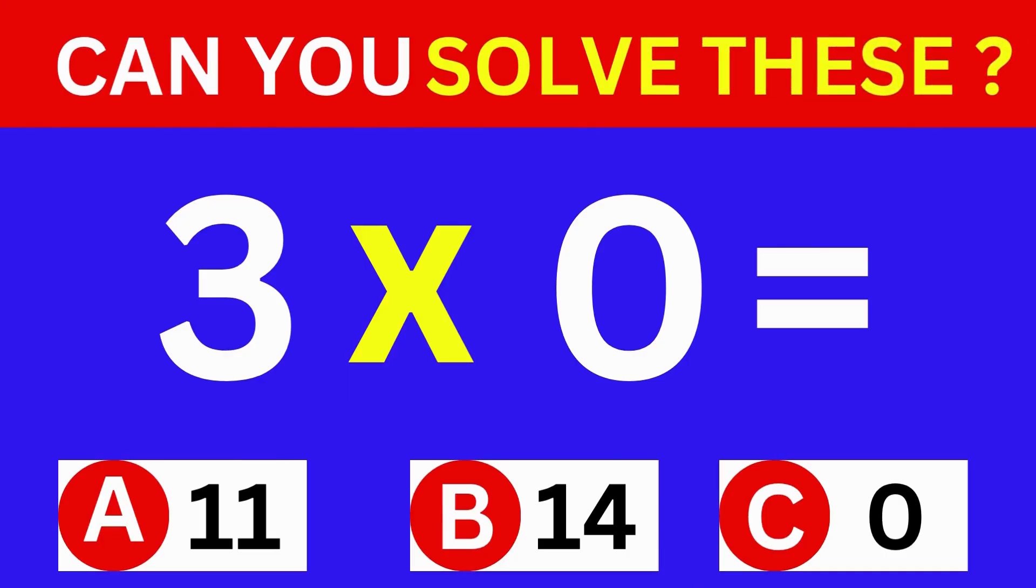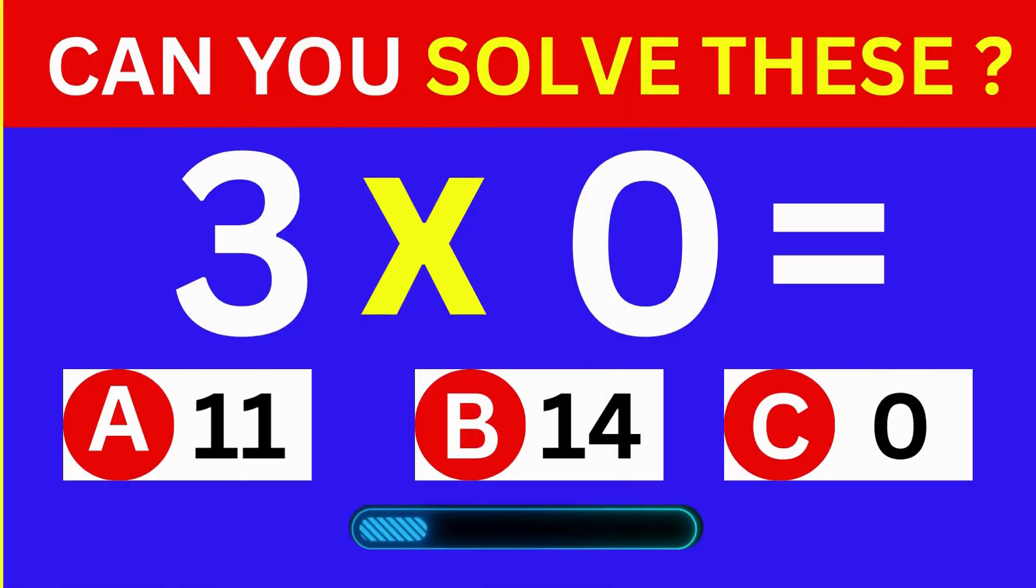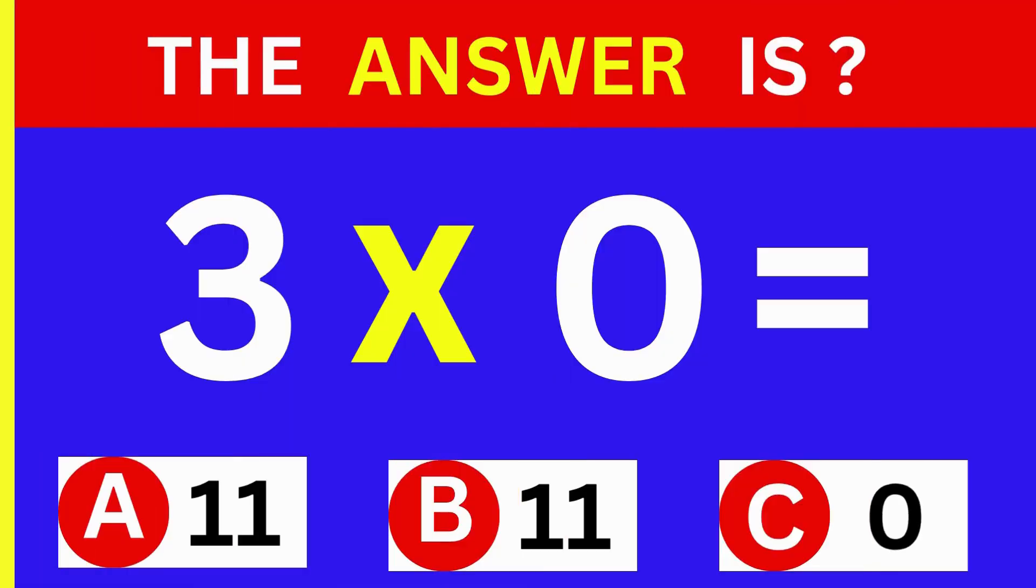3 times 0 equals. A: 11, B: 14, C: 0. The answer is option C, 0.